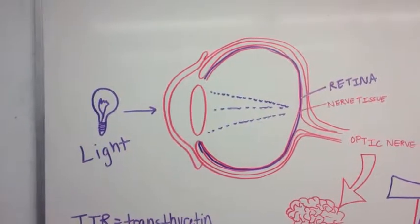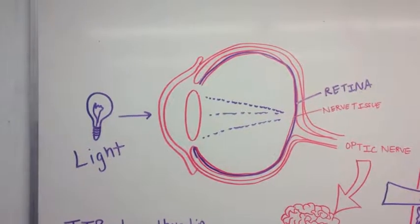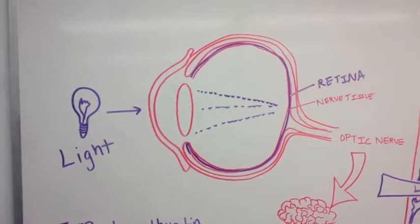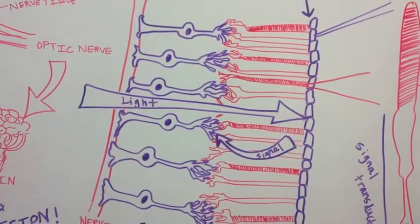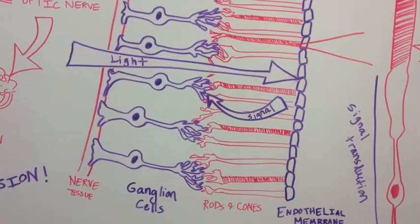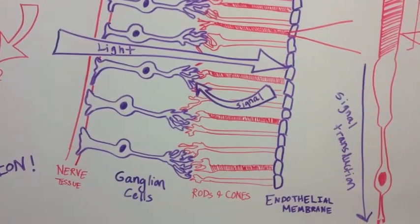Signal transduction for photoreception begins when light enters the eye. Light passes through the nerve tissue and the ganglion cells and rods and cones and first hits the endothelial membrane.